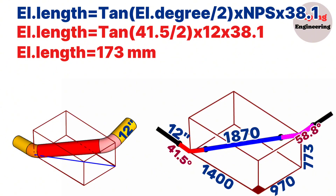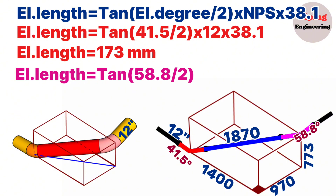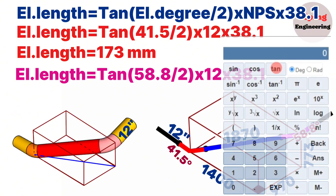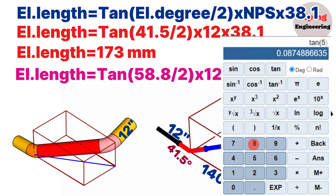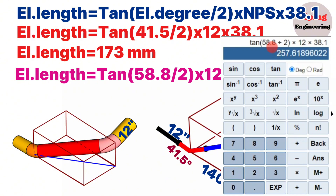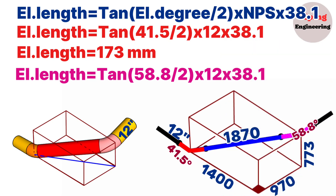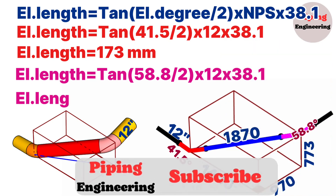Now let's calculate the 12-inch 58.8-degree elbow length. The 12-inch 58.8-degree butt weld elbow center-to-end dimension equals tangent(58.8/2) × 12 × 38.1, which equals approximately 258 millimeters.